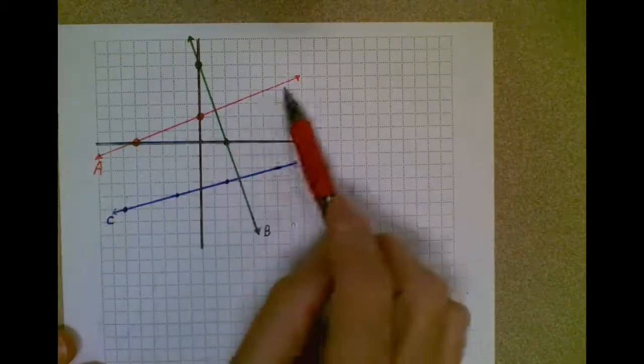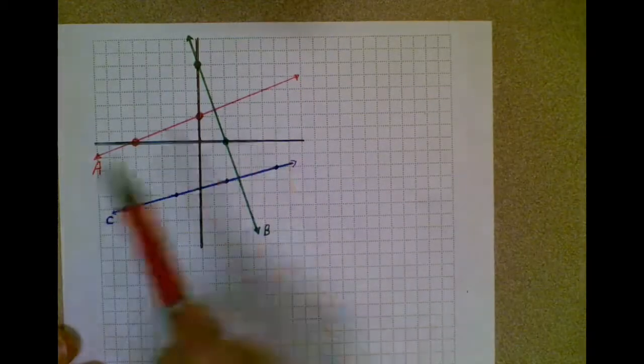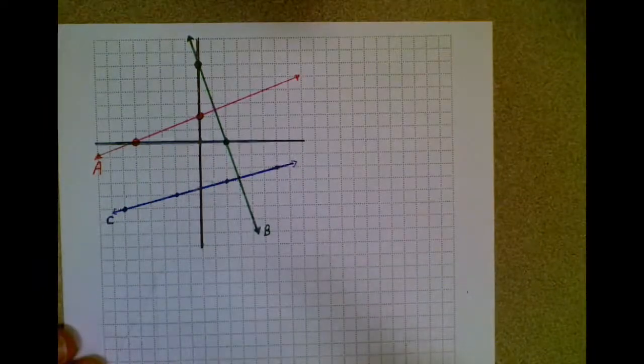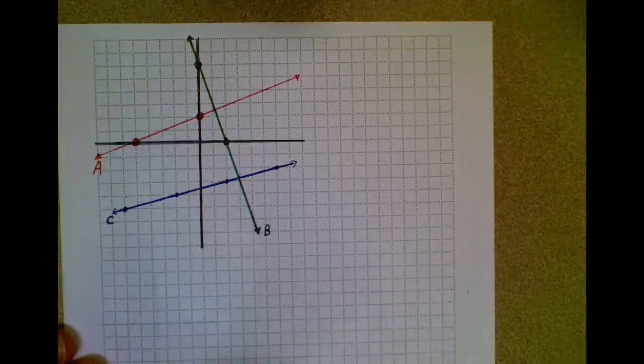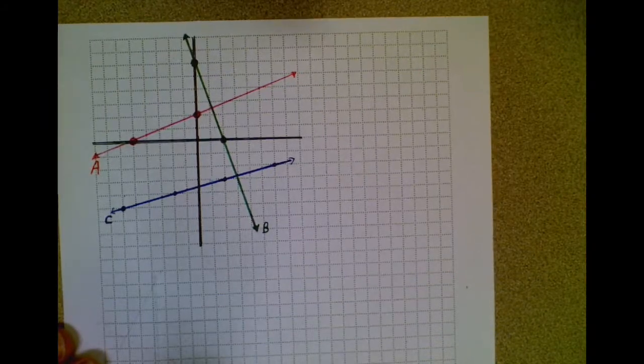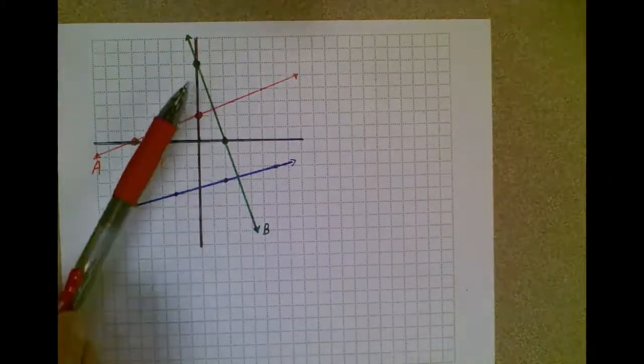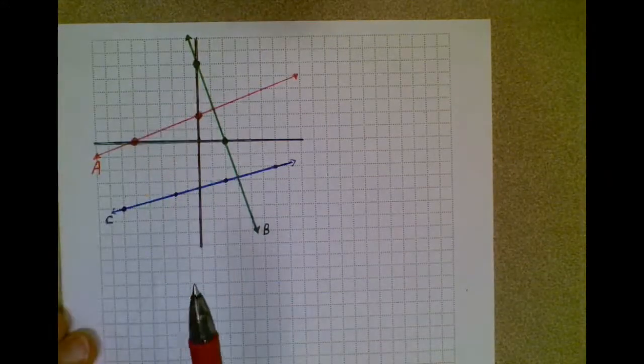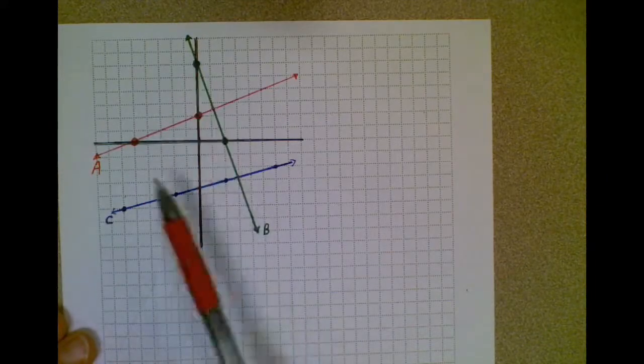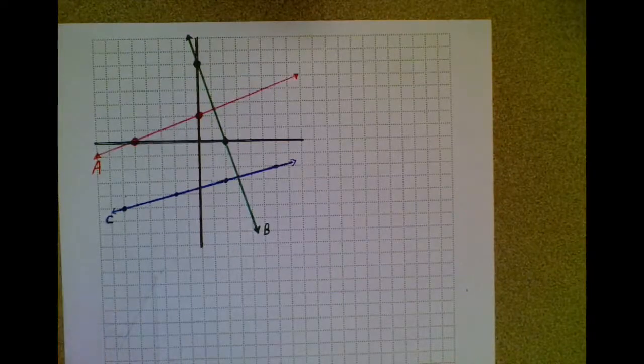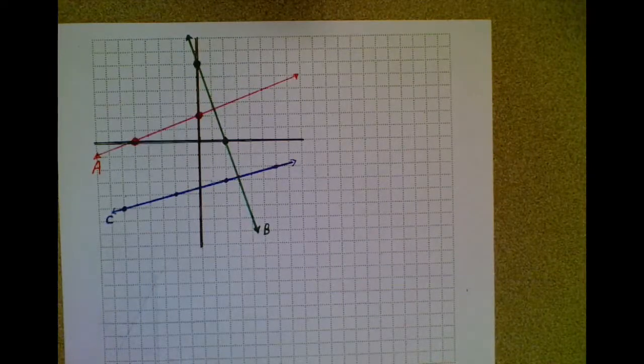This line has a certain degree of slant or incline to it, so slope is going to describe the amount of slant or incline. Think of the roof of a house that definitely has a slope to it or an incline, and different houses would have different degrees of slope. So this green line definitely has a way different slope or slant than this red line. The blue line seems pretty similar to the red line, but it's probably slightly different once we do the calculation.